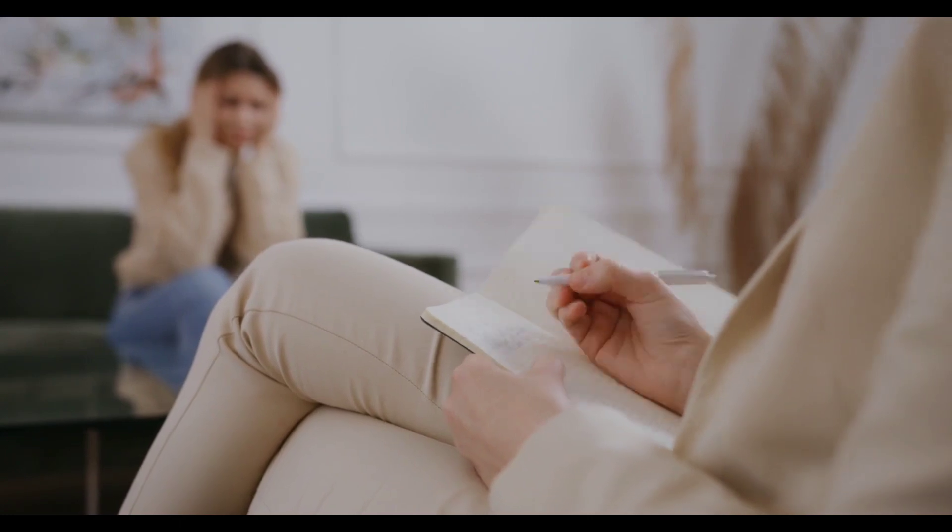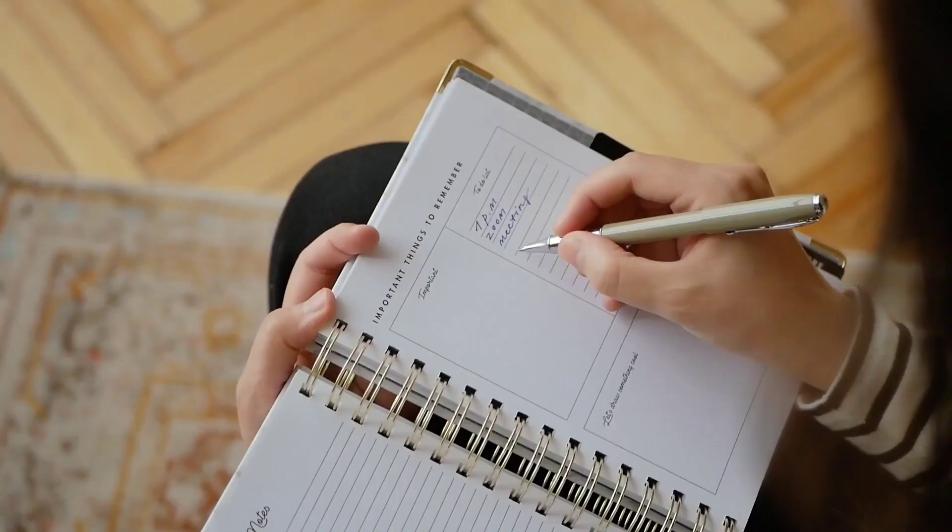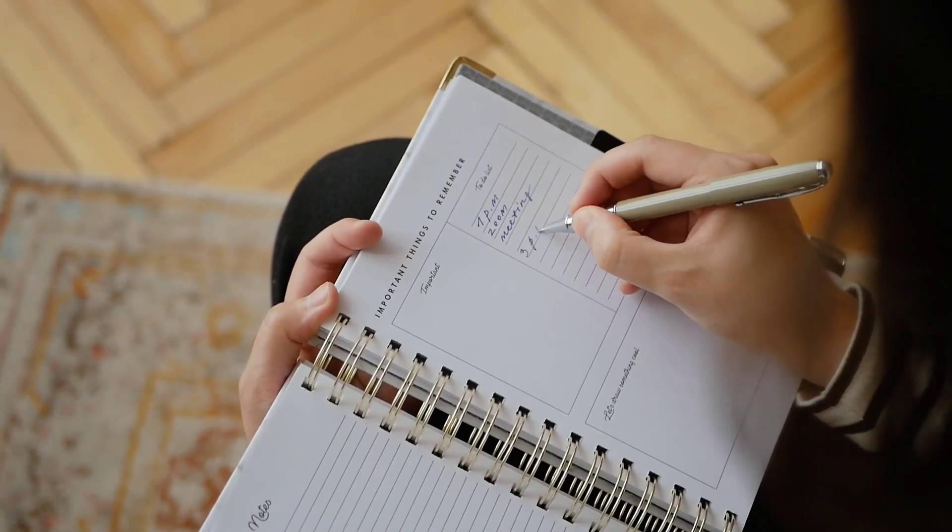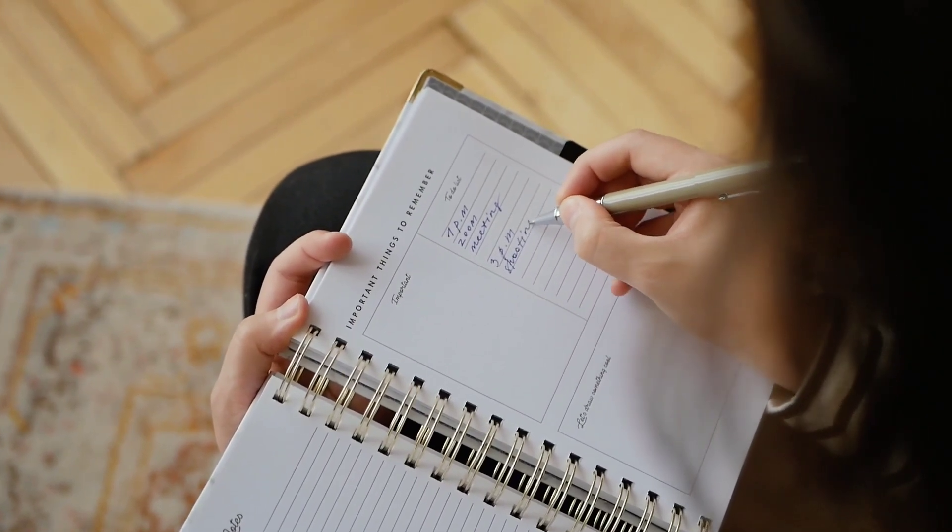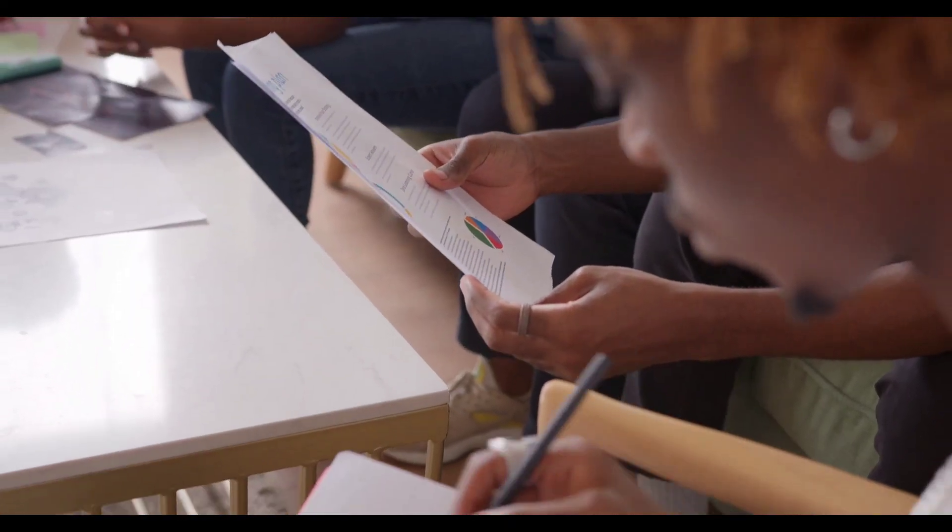1. The word pen comes from the Latin word penna, which means feather or wing. 2. The earliest pens were made from reed or quill feathers, and they were used in ancient civilizations like Egypt and Rome.